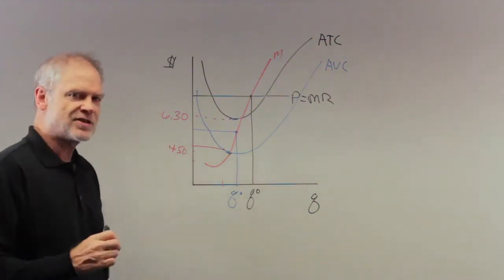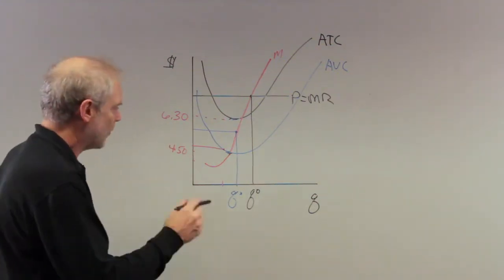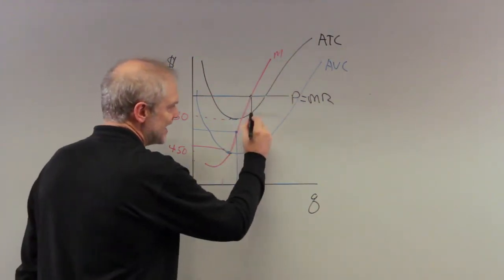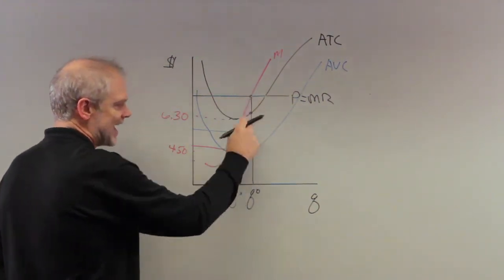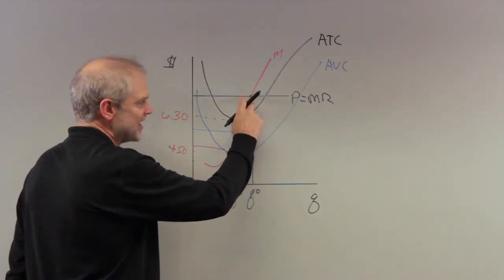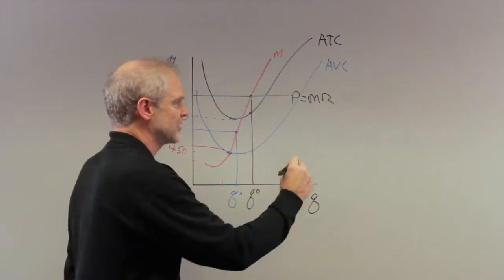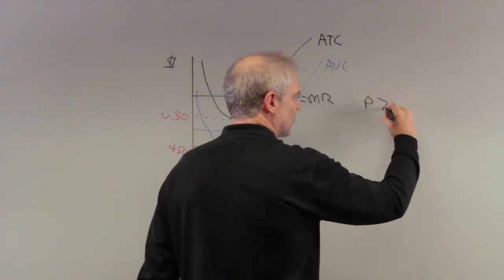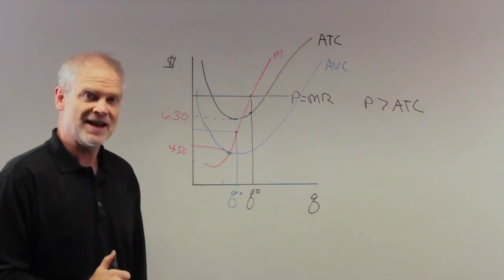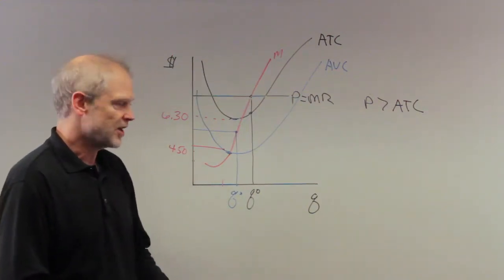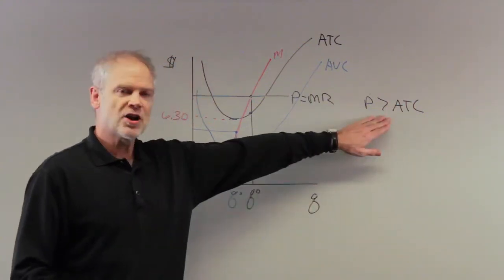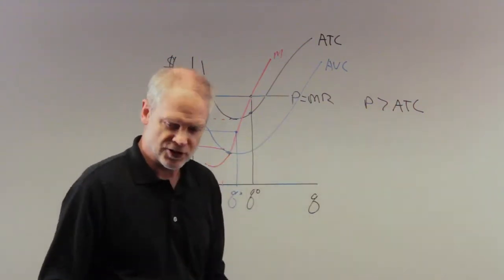Now ask yourself what's going on. This is the firm's price, and this is the average total cost at this level of output. The price exceeds average total cost, so P is greater than ATC. This firm is clearly making money — it's making above normal returns, not just normal returns. Remember, average cost already includes a normal rate of return to the firm.